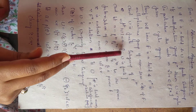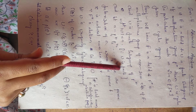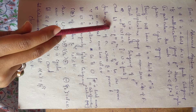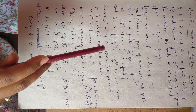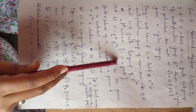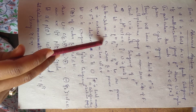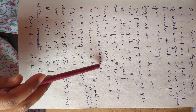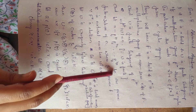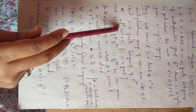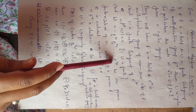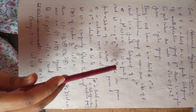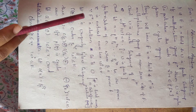Since u is a finite subgroup of f*, let |u| = n, and let n = p1^r1 · p2^r2 · ... · pk^rk be the prime factorization of n, where each p_i is prime, each r_i is a natural number, and i ranges from 1 to k.